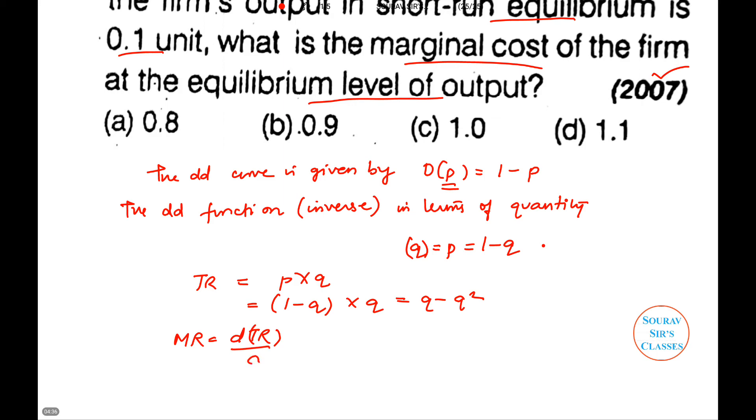Let us get the marginal revenue MR, which is differentiating the total revenue with respect to q, and we will get 1 - 2q. So here it was given q is equal to 0.1. At 0.1 we'll evaluate the marginal revenue at q equal to 0.1, so you'll get 1 - 2 times 0.1, and this will be 0.8. So the answer will be option A.